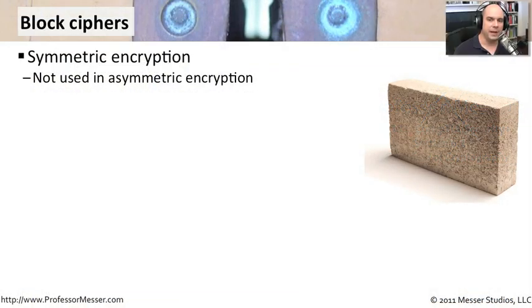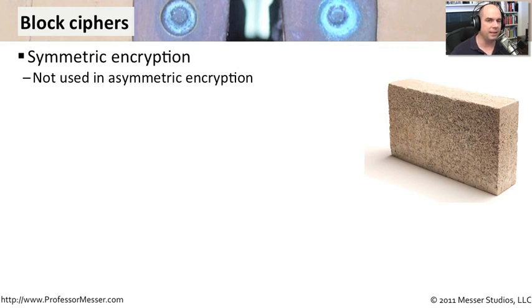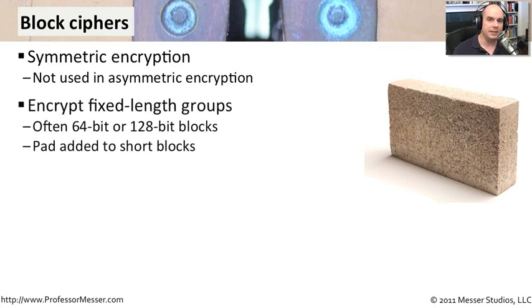When you've got a plain text bit of information and you're trying to encrypt it and get it into cipher text, there are a number of different ways to go through the actual encryption process. When we're talking about symmetric encryption, one of those methods is called a block cipher. As the name implies, a block cipher takes a fixed group of information and encrypts that fixed block all at one time. Usually these blocks are 64 bits or 128 bits long — a size that is predetermined so you can keep it the same when encrypting and decrypting.